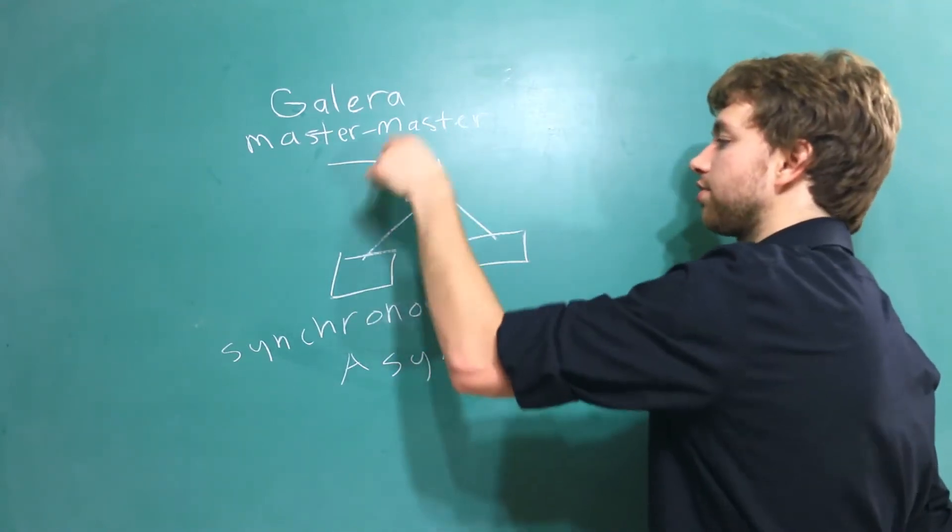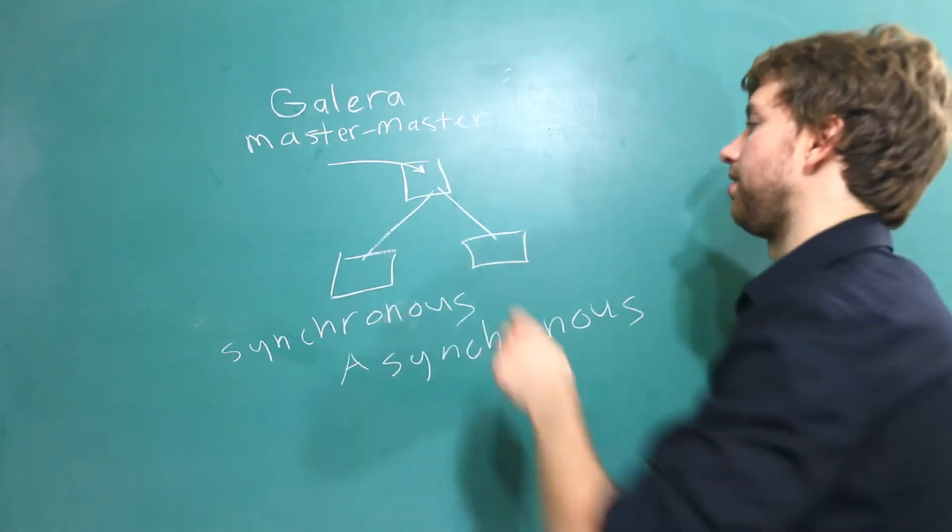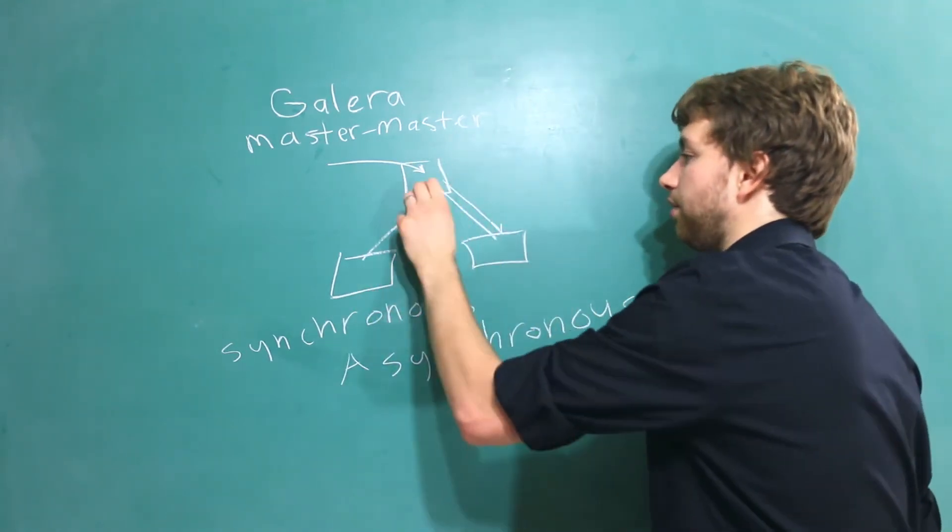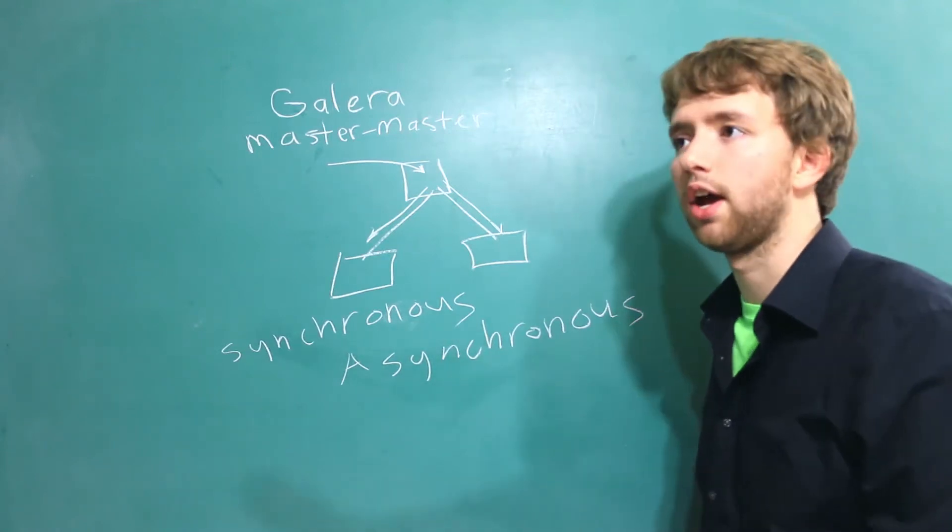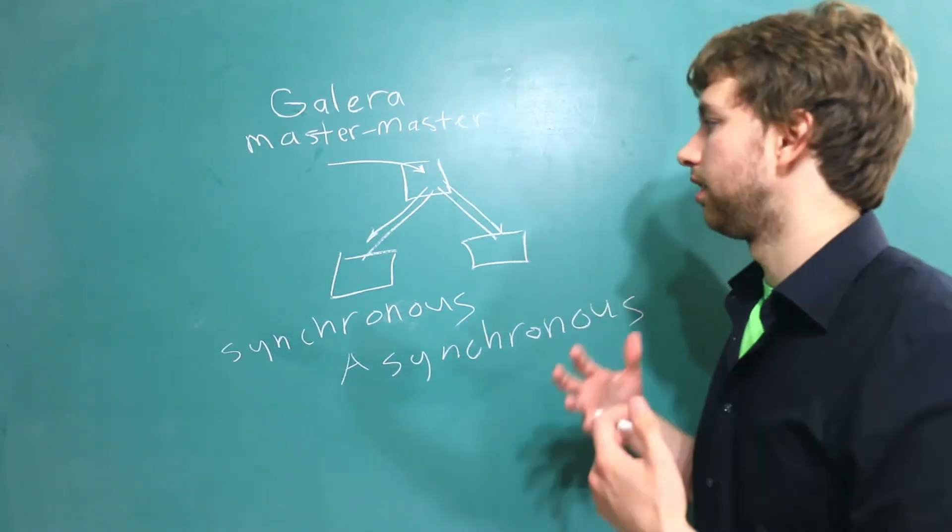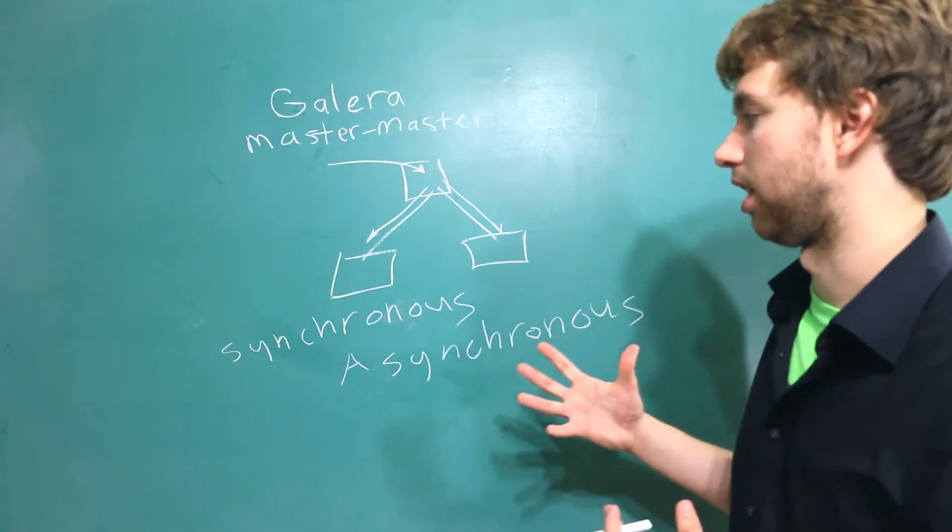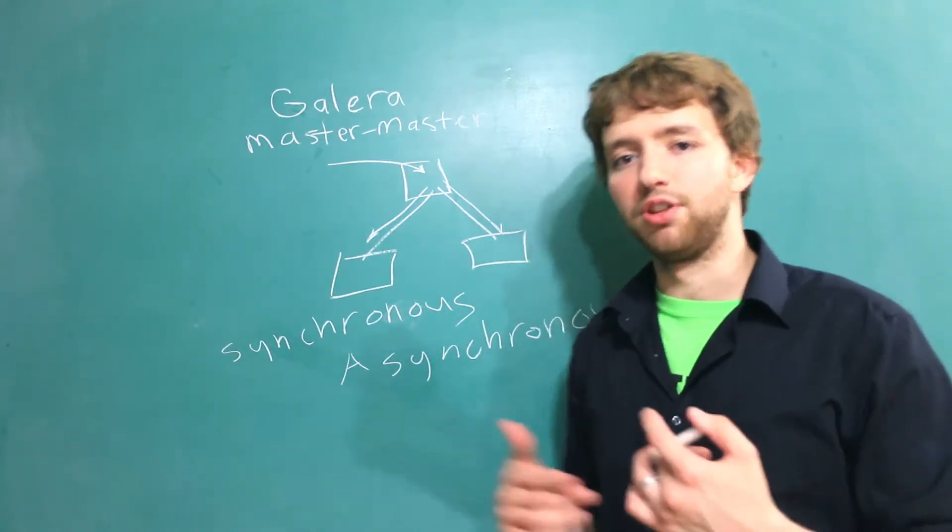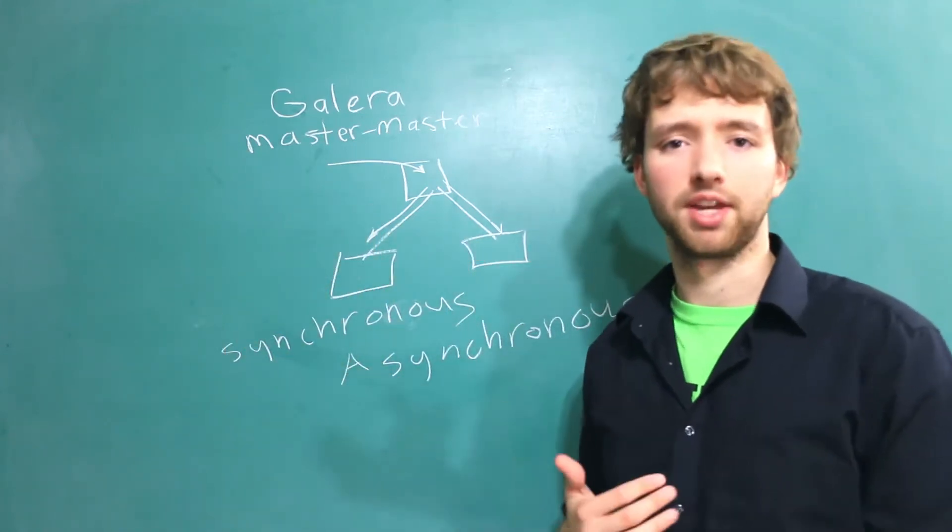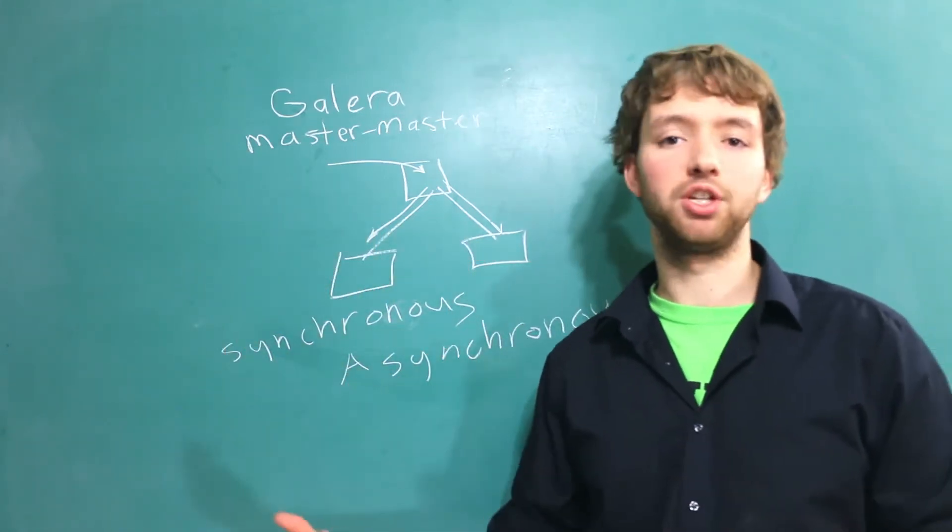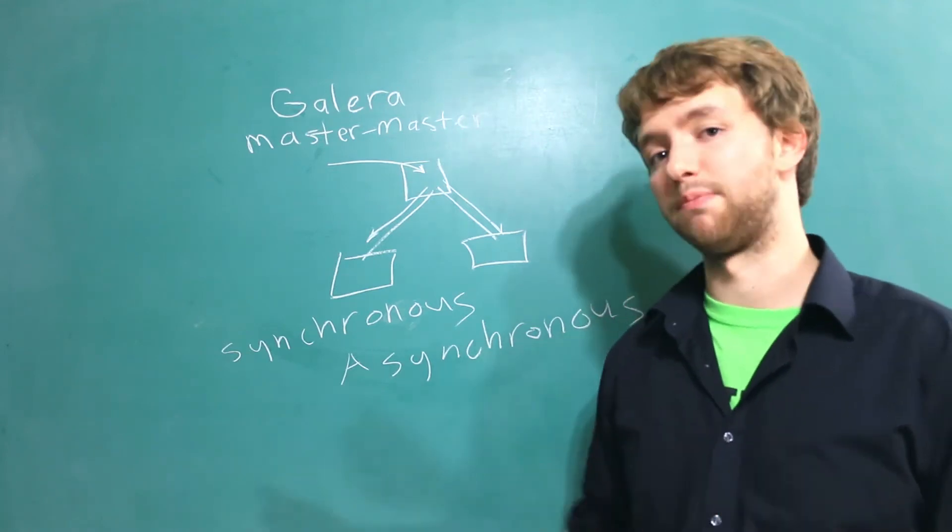So I write to this node first and then eventually that data will be replicated down to the nodes but we're not guaranteed you know hey this is going to take 20 seconds or five minutes it's just going to happen some time. Now I think some databases give you the capability to kind of determine the time frame of within how long you want that to happen but I don't think you're always going to have that capability.